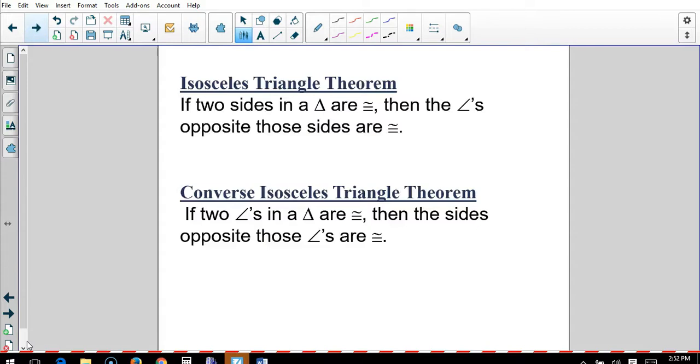So the isosceles triangle theorem: if two sides in a triangle are congruent, then the angles opposite those sides are congruent. And the angles opposite those sides, remember, are your base angles. And the converse of that is if two angles in a triangle are congruent, then the sides opposite those, those sides will be the legs, are congruent.